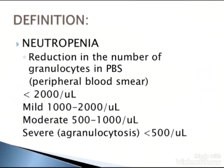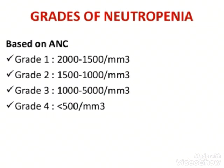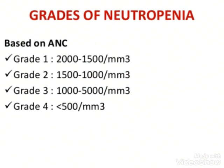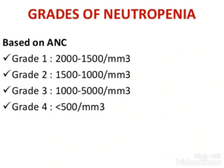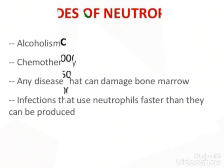Now we will see the grade. It is divided according to the reduced numbers. In grade 1 it will be between 2000 to 1500. In grade 2 it will be 1500 to 1000. In grade 3 it will be 1000 to 500. And in grade 4 it will be less than 500. So this is the grading of neutropenia when the count gets decreased.